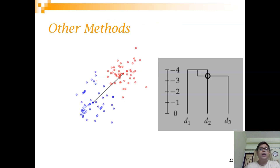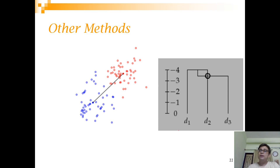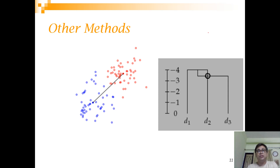Another method is the centroid method. Instead of calculating min, max, or average distances, you find the centroid of each cluster and then compute the distance between centroids. However, this method has a problem called inversion: when you merge two clusters, the new inter-cluster distance can actually be smaller than the distance at the previous merge step — for example, the distance was 5 in the first step but becomes 3 in the next. This inversion problem does not occur in the other methods.